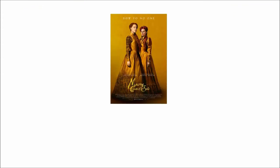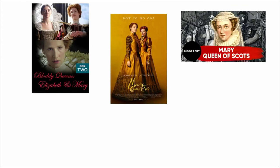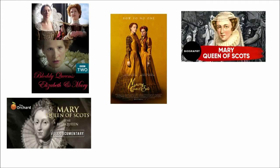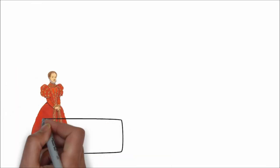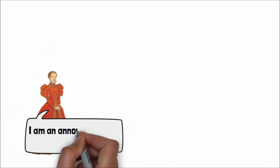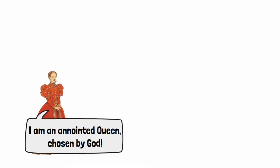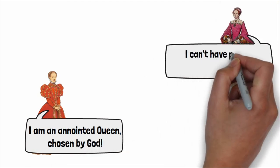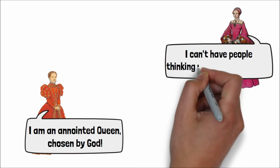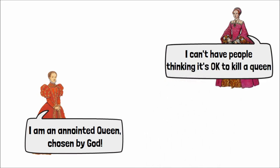Many movies and documentaries have been made about Elizabeth and Mary, so we need to think about why Mary's execution is so significant. Remember, Mary was an anointed monarch and her execution sets a dangerous precedent from Elizabeth's point of view — in other words, if a queen chosen by God can be executed, what is there to stop the same thing happening to Elizabeth?